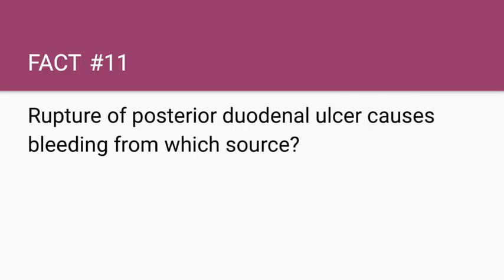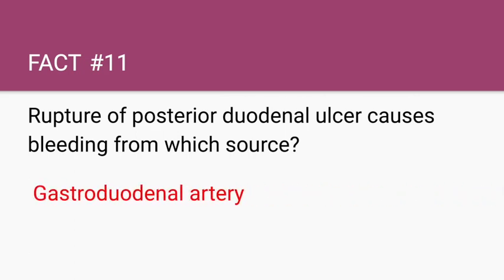Rupture of the posterior duodenal ulcer can cause bleeding from which arterial source? The answer is the gastroduodenal artery.